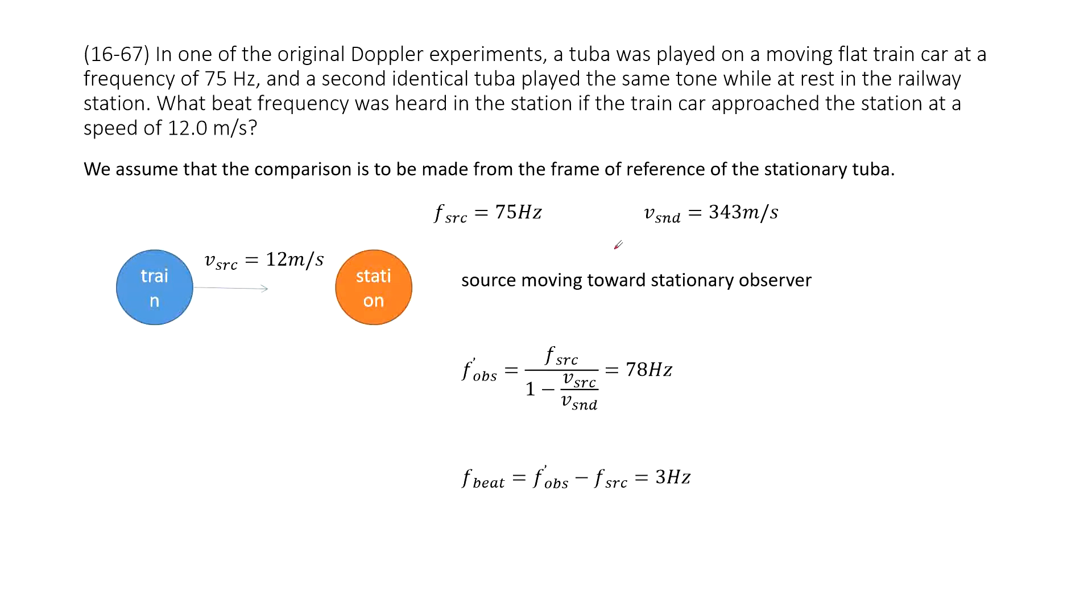And we also know the sound wave travels 343 meters per second in the air. You need to find the beat frequencies of the tuba. The person heard from the train and the tuba just stationary on the station.